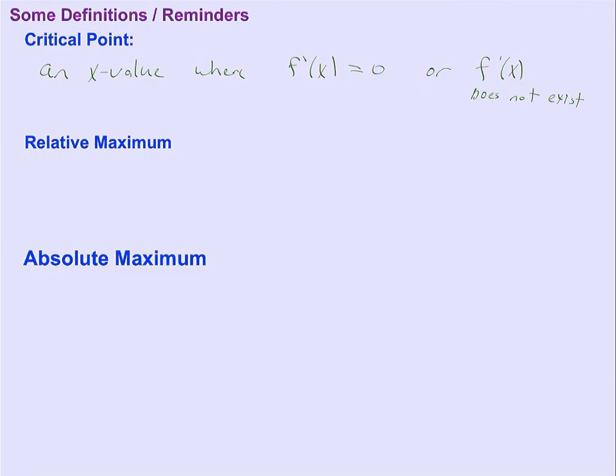We'll call those critical values. They're going to be important to us. The next definition is a relative maximum. The same thing will apply to a relative minimum, just opposite.